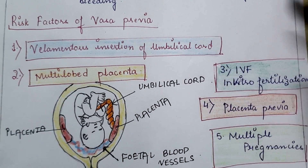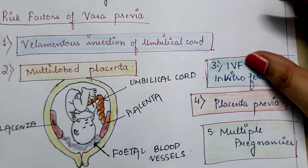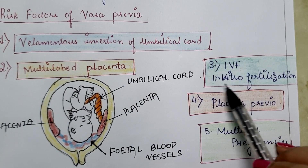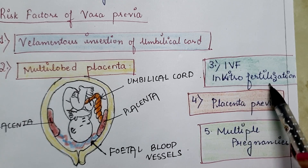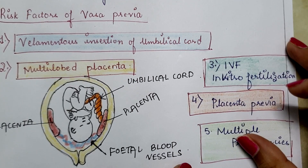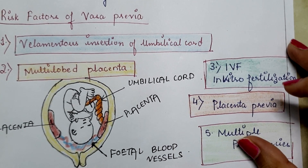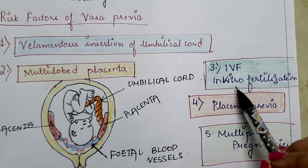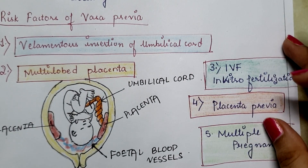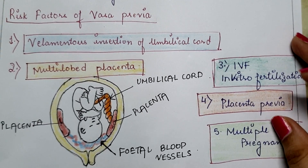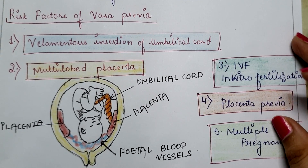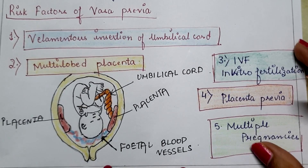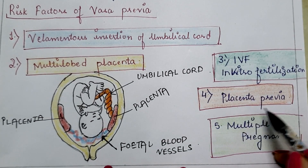Next is IVF — in vitro fertilization. In the case of in vitro fertilization, which is an artificial fertilization technique, there are more chances of abnormal placentation. The placenta may attach at the lower uterine segment, which is also one of the causes of vasa previa.